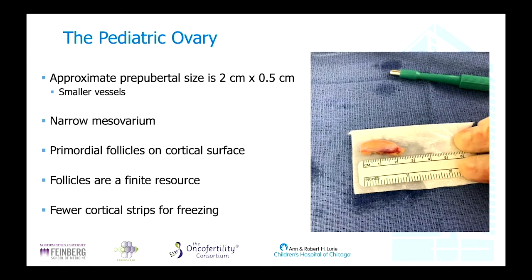We want to develop the concept of not losing anything and creating pediatric-specific processes, work that has already shown great promise in forthcoming publications. The approximate pre-pubertal ovary size in a very young child is about two centimeters in length by about half a centimeter in width. The vessels are smaller, there is a very narrow mesovarium between the fallopian tube and the ovary, and the primordial follicle reserve is close to the cortical surface. We will ultimately get fewer cortical strips from this patient, so we're aware of how many chances we have to achieve live birth rate or hormone restoration.